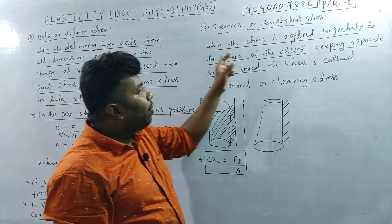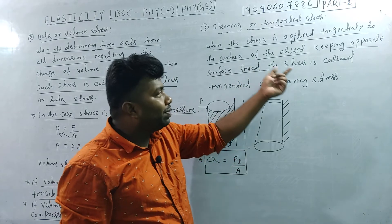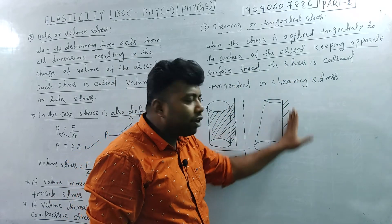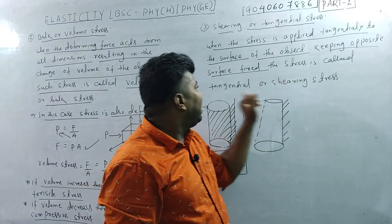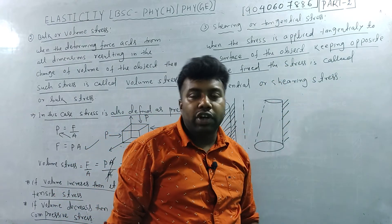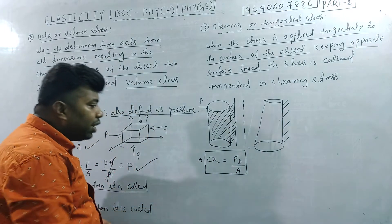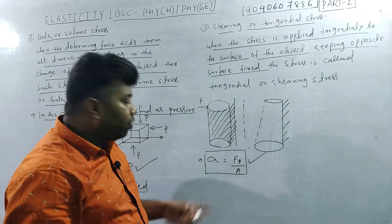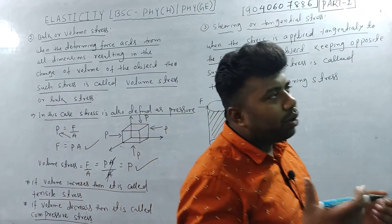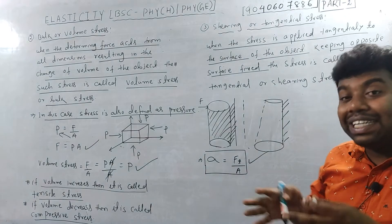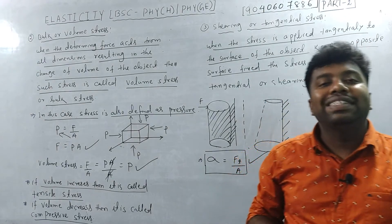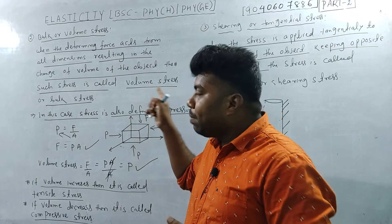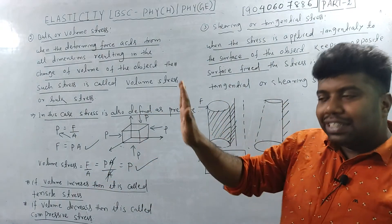When the stress is applied tangentially to the surface of the object, keeping the opposite surface fixed, this stress is called tangential or shear stress. The formula is sigma equals tangential force by area. So in summary: longitudinal force, pressure, and tangential force are the three cases.